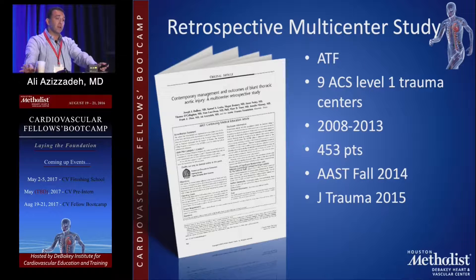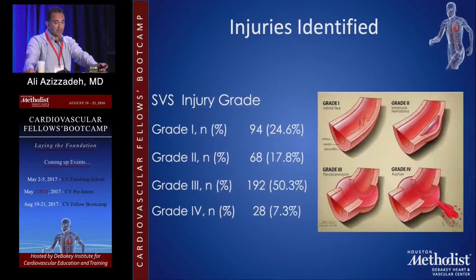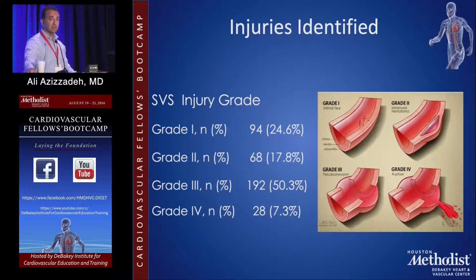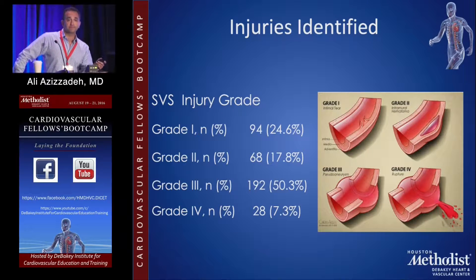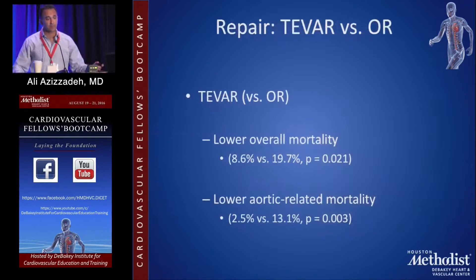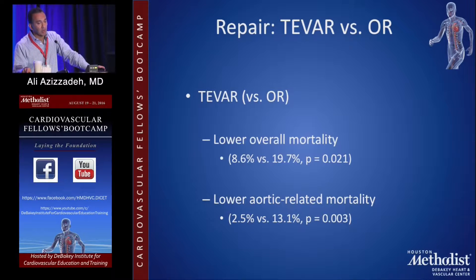That study included 453 patients — the largest series ever published in the literature on traumatic aortic injury — presented and published in the Journal of Trauma. The breakdown: grade three is the most common at 50%, grade two is 18%, and grade one is about a quarter of patients. One indication to do TEVAR on a grade one: if the patient has a head injury and you can't use anti-impulse therapy — you repair the aortic injury, then allow blood pressure to increase. TEVAR showed lower overall mortality: 8.6% versus 20% for open, and lower aortic-related mortality: 2.5% versus 13%.